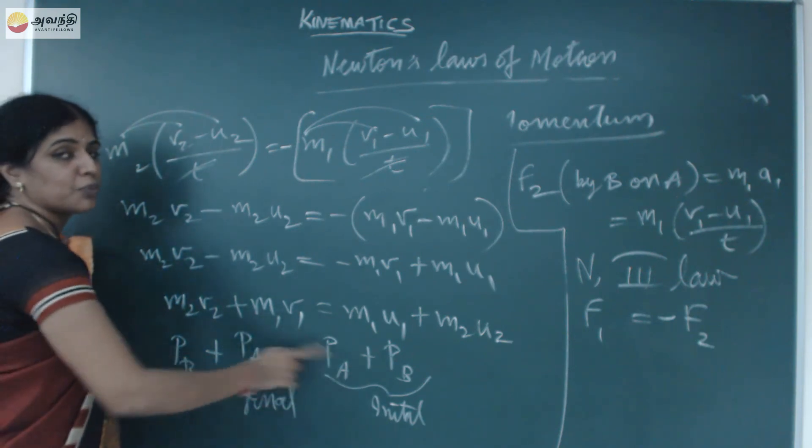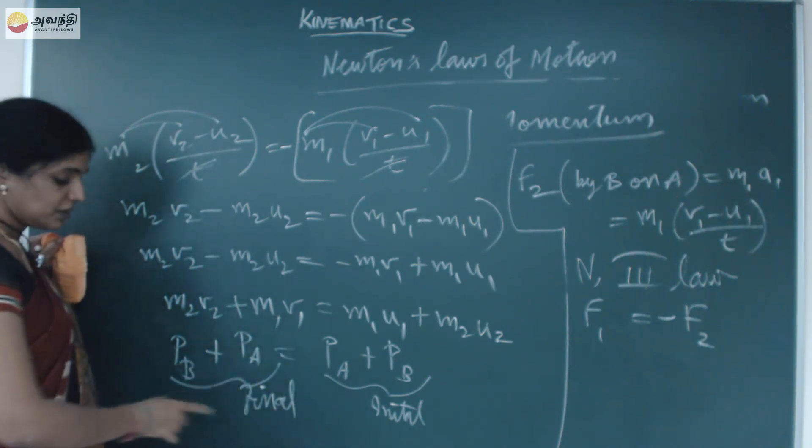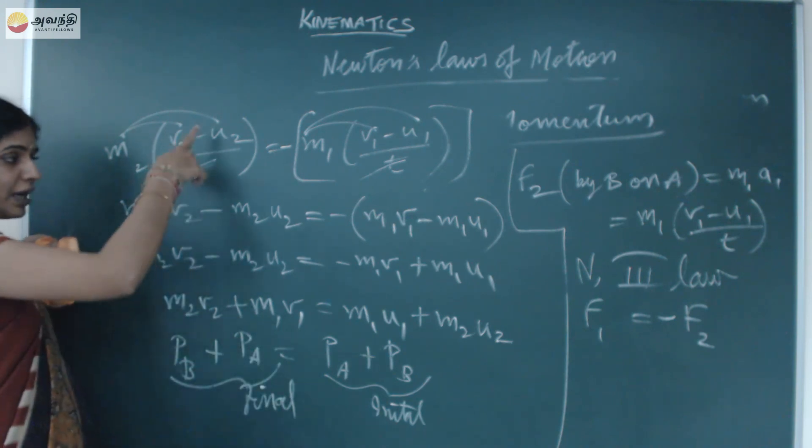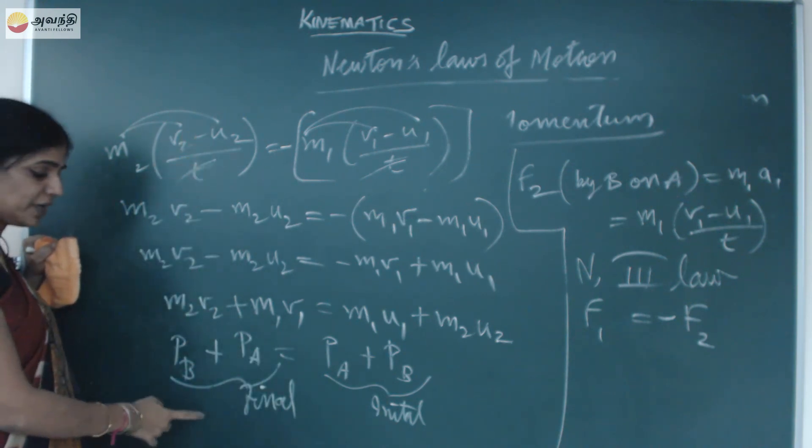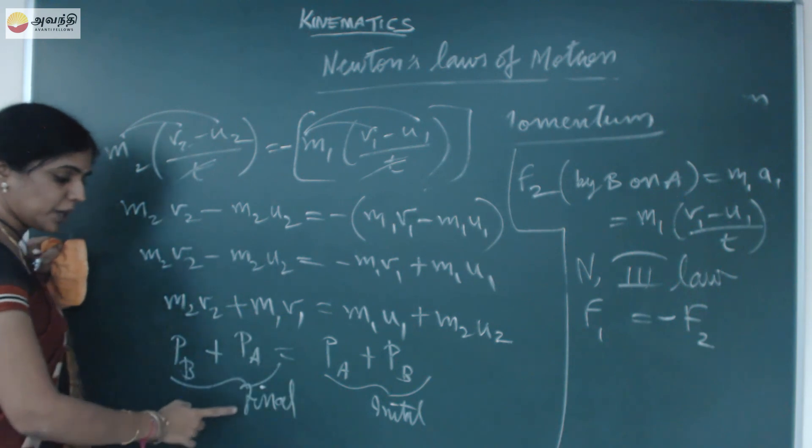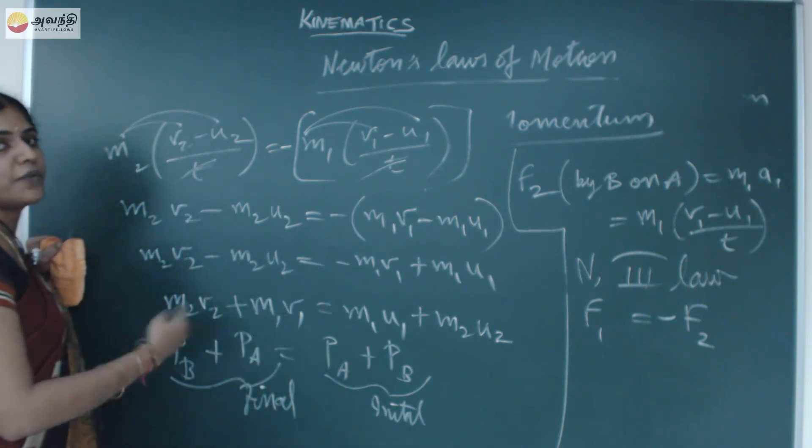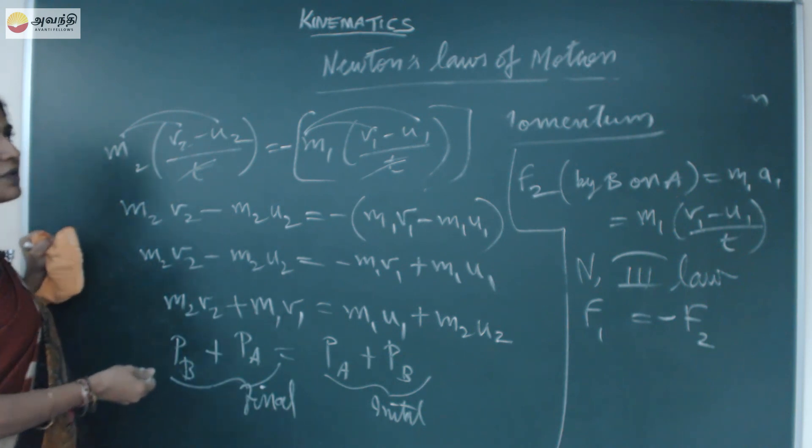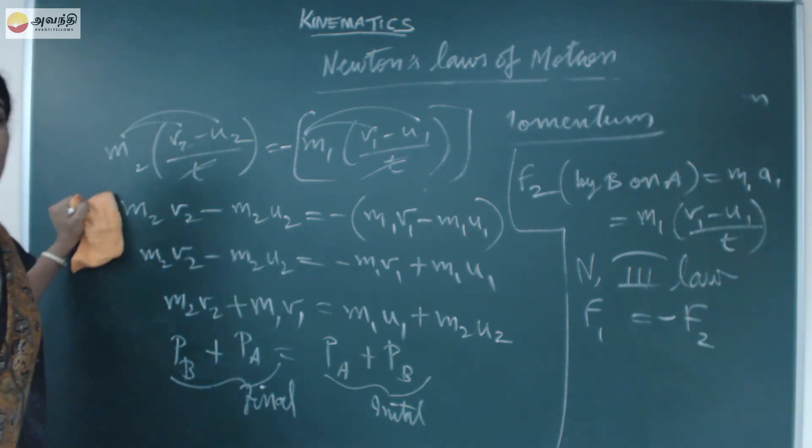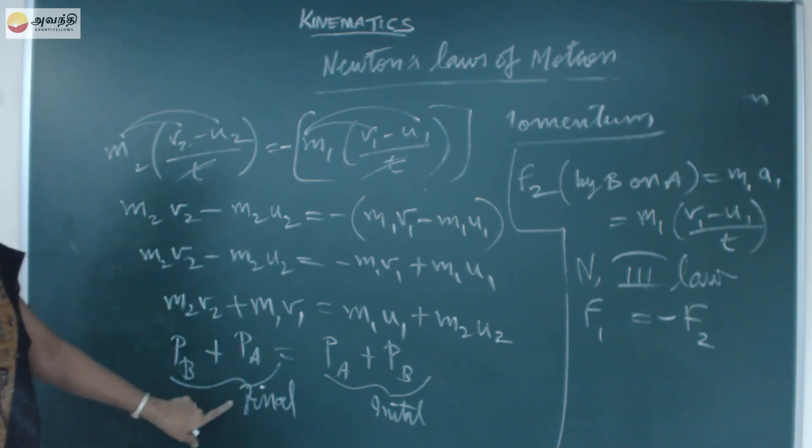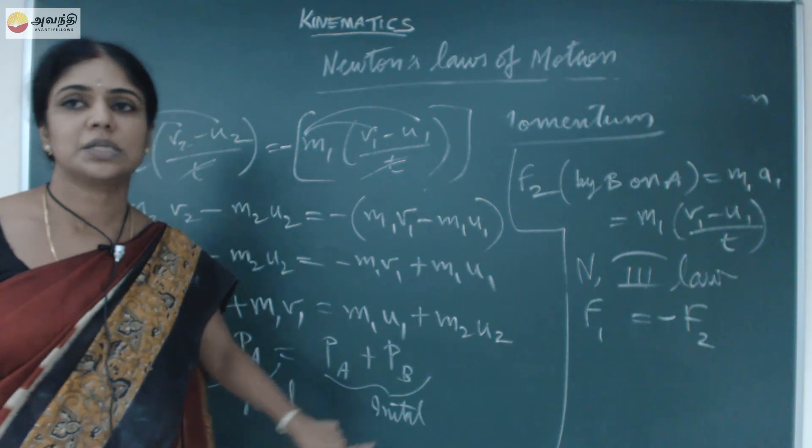So before and after, the momentum remains to be the same, since we have proved that by law of conservation of momentum. What we have seen here? The total momentum before collision equals total momentum after collision. By this we have proved the law of conservation of momentum. That is, when no external forces are acting on a system, I can prove that the total momentum before and after remains to be the same.